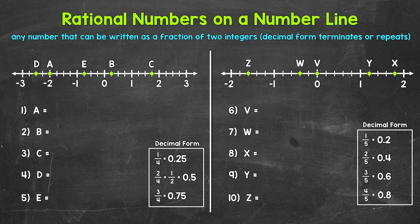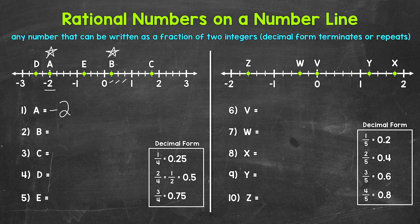Looking at number one, we have point A. Point A is at negative two on the number line. Next, we have point B, which is between zero and one. We have one fourth, two fourths (one half), and then three fourths. So point B is at one fourth on the number line.